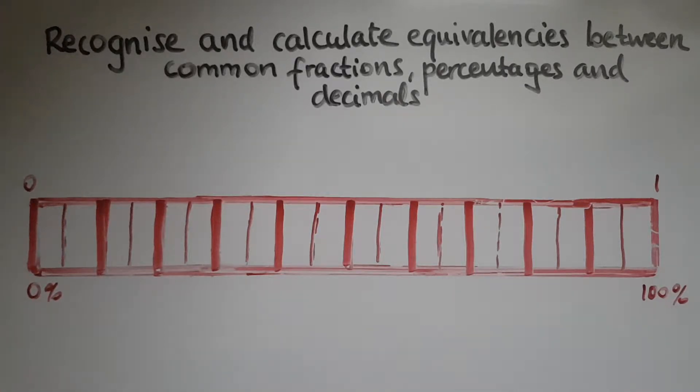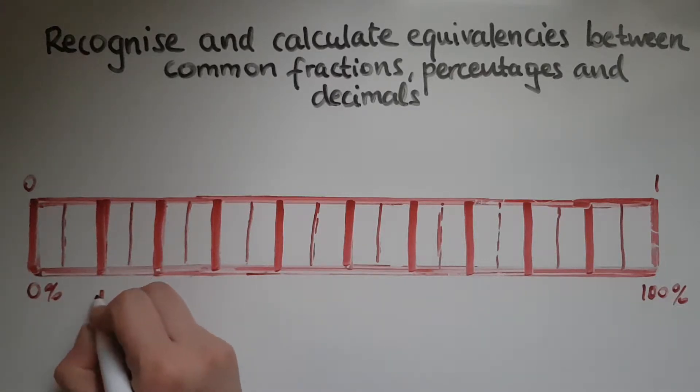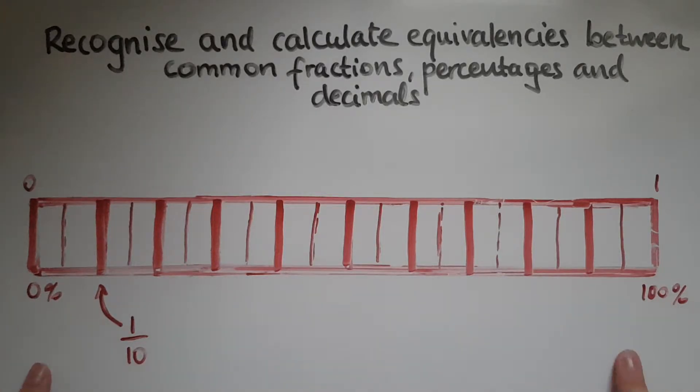Let's have a look first at this amount, up to this amount which is here. What would that be as a fraction? As a fraction this will be 1 out of 10 or 1 tenth, because there's 10 overall and this is just one of them. Now what is that equal to as a decimal? That is the same as saying 1 divided by 10, and we should know that 1 out of 10 means 0.1.